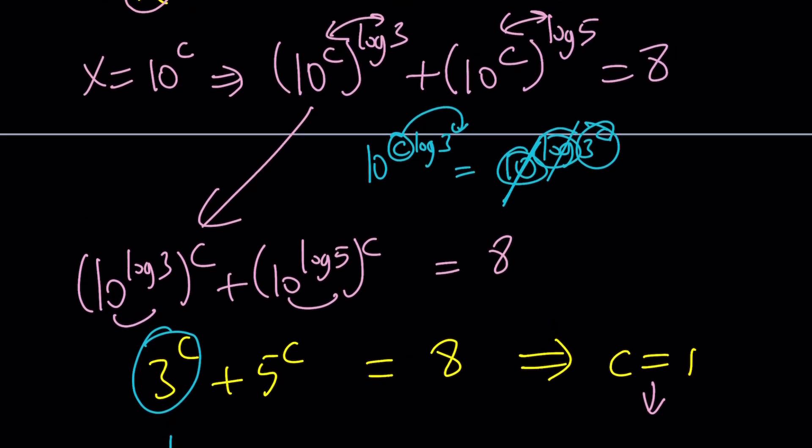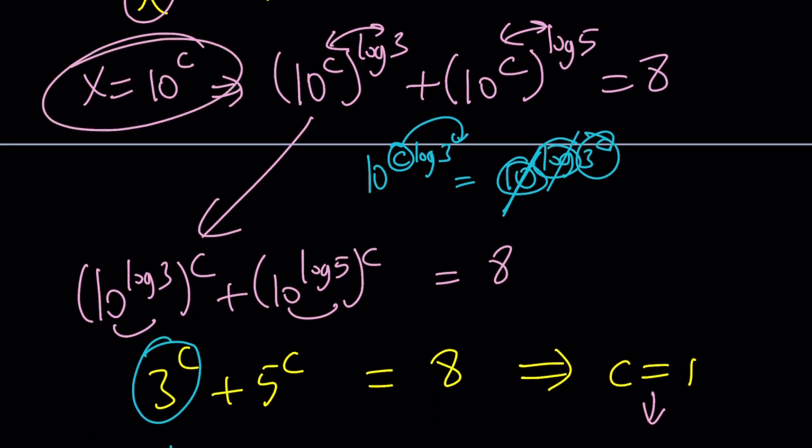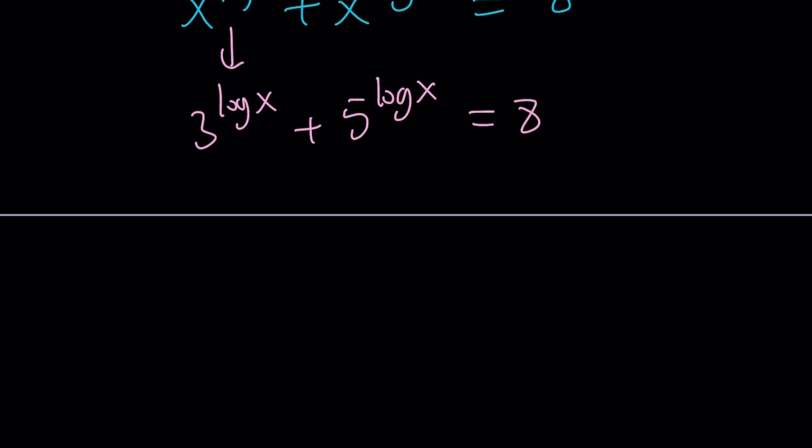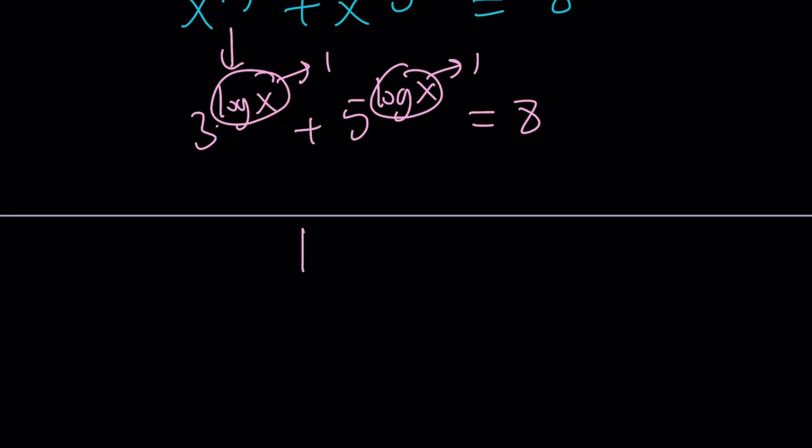What is x? What is c? x is 10 to the c, and c is 1. That means x is 10. So, let's see if we can find 10 again. And we should. So, this means log x is equal to 1 because 3 plus 5 is equal to 8. And log x equals 1 implies x equals 10. Now, let's talk about why this is the only solution.